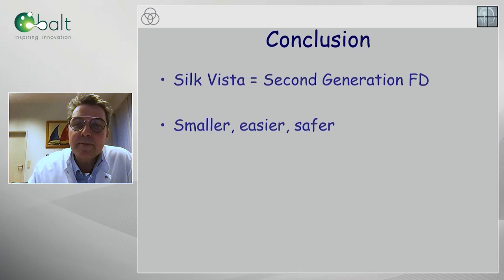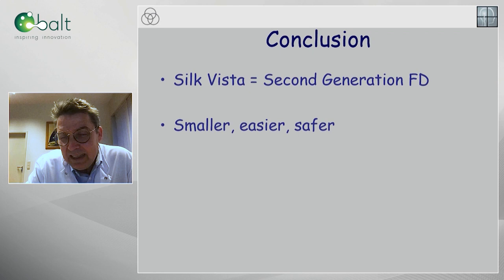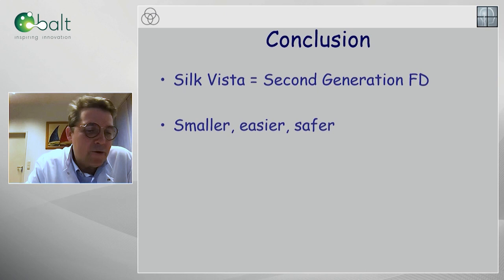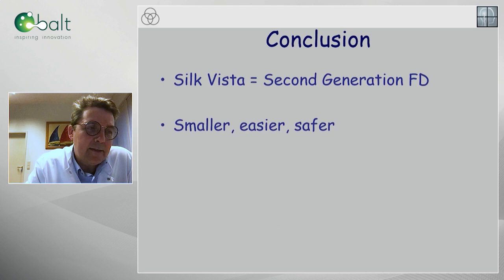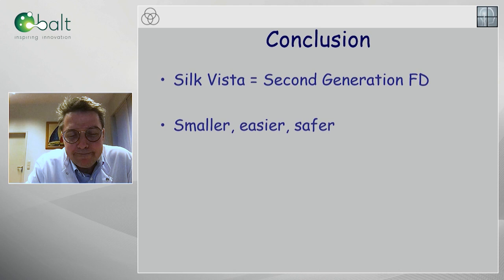As a conclusion: Silk Vista is in my opinion the beginning of the second generation of flow diverters. Before, all flow diverters went through 0.027. I don't want to go to distal vessels with 0.027. The 0.017 is already a huge step forward, but for the larger sizes — all flow diverters up to 5 millimeters — handling 0.021 is much easier and safer. The fact to have something which is entirely visible with DFT is of important help. Thank you.